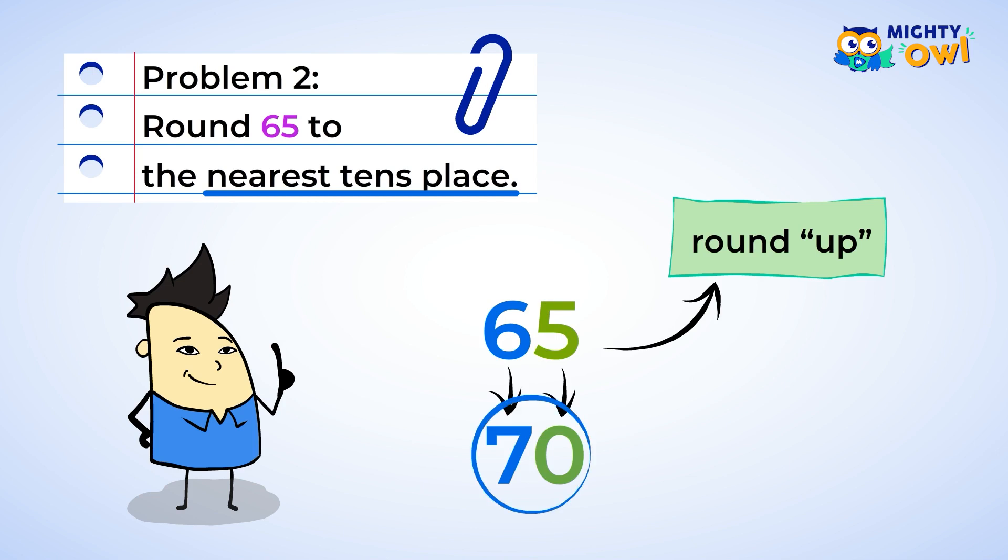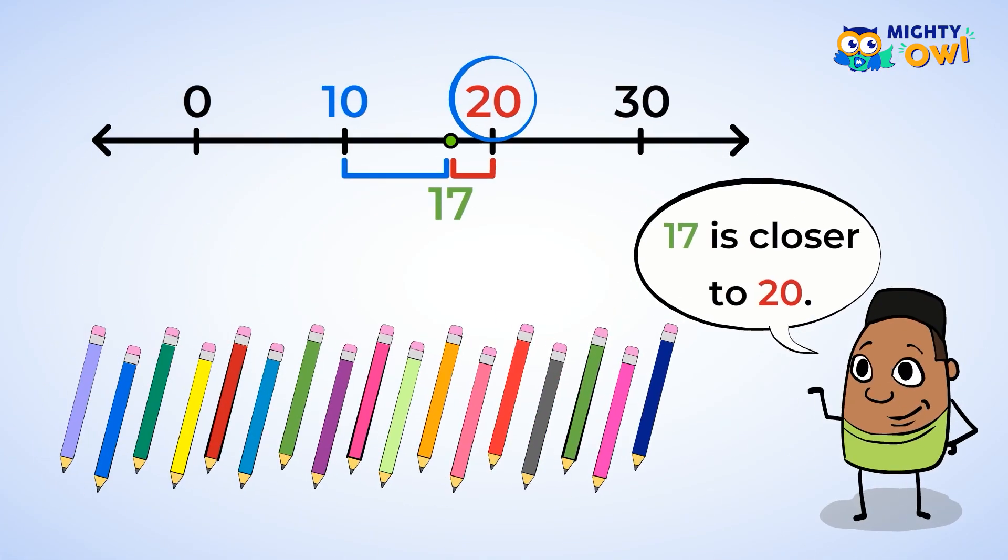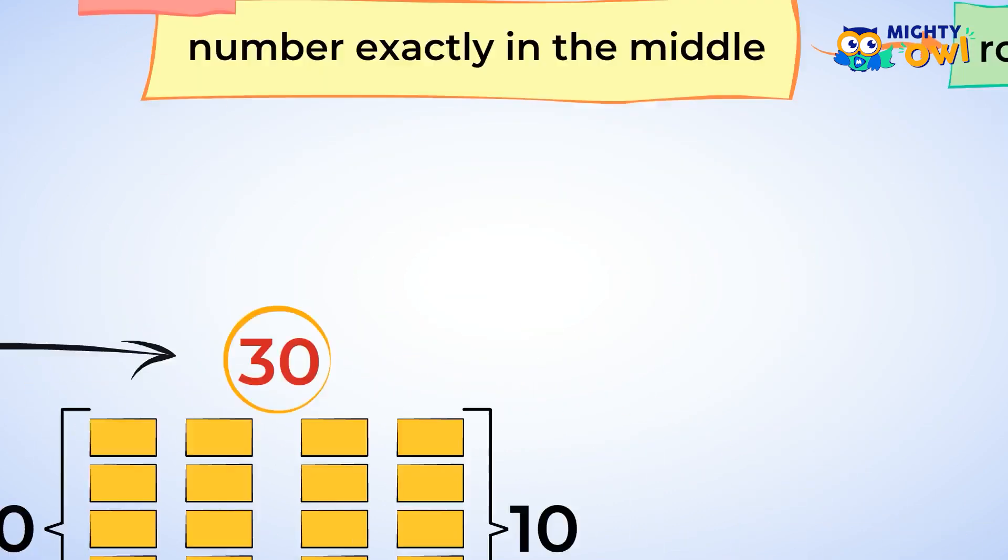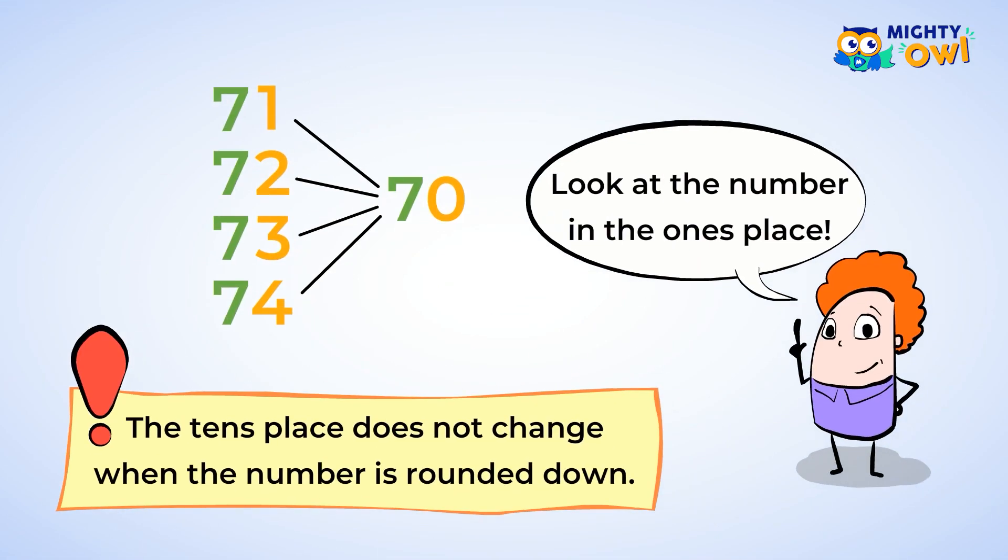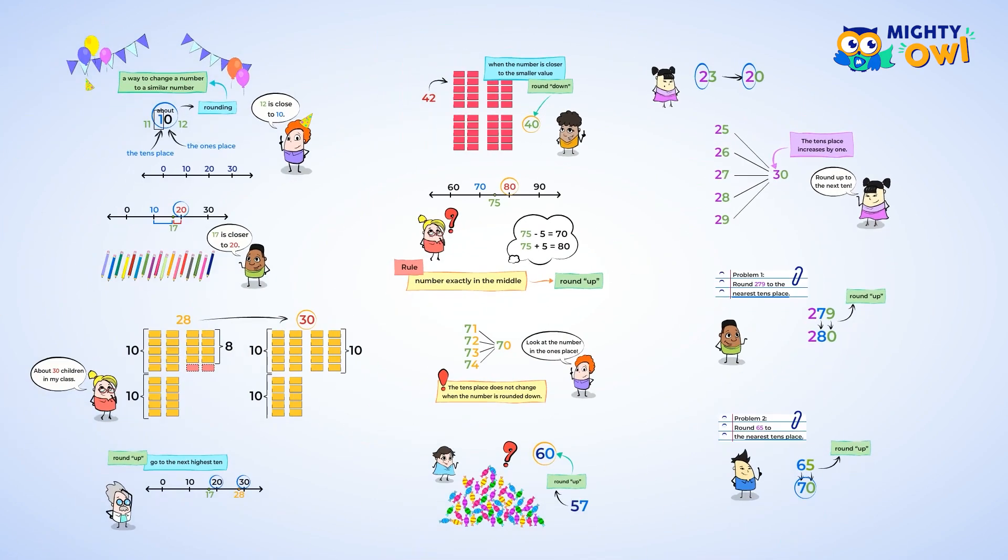Fantastic work. Now let's sum this all up. Rounding to the nearest ten means to change the number to the closest tens value. If the number in the ones place is four or below, round down, and keep the tens value the same. If the number in the ones place is five or more, round up, and go to the next ten. Now you know how to round. See you next time.